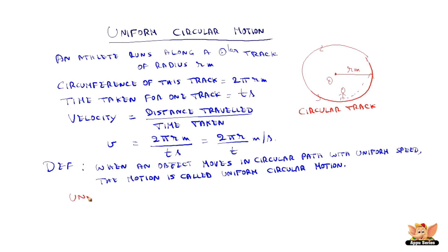The units of the velocity in uniform circular motion is meter per second or meter second minus 1, and it is a vector quantity as it is velocity.